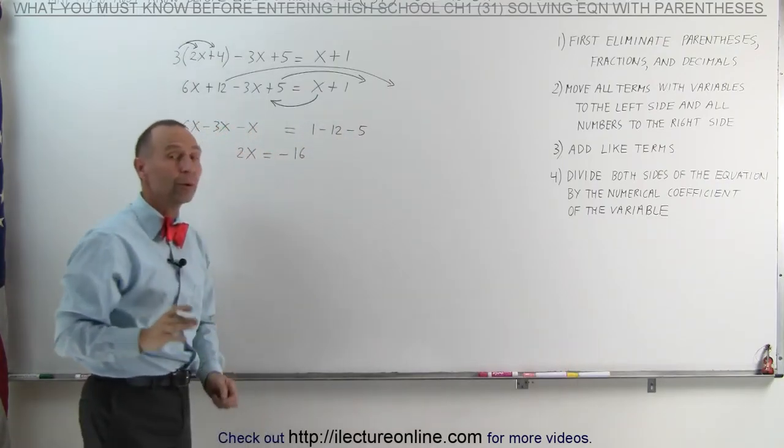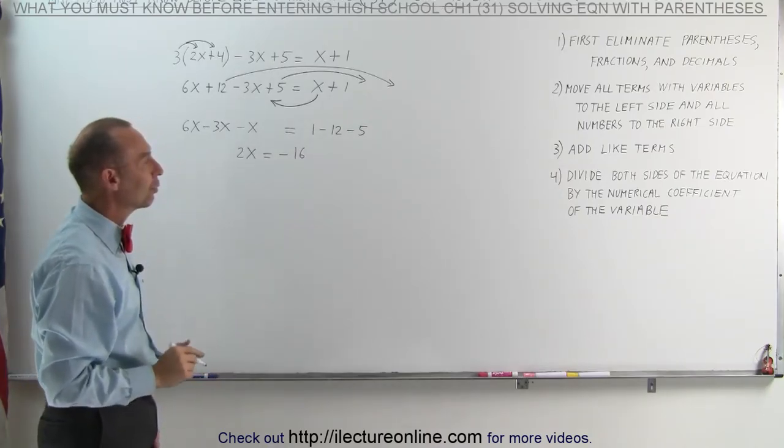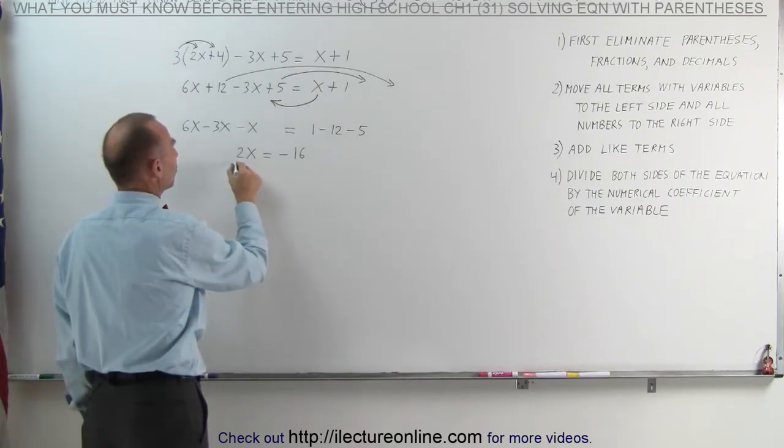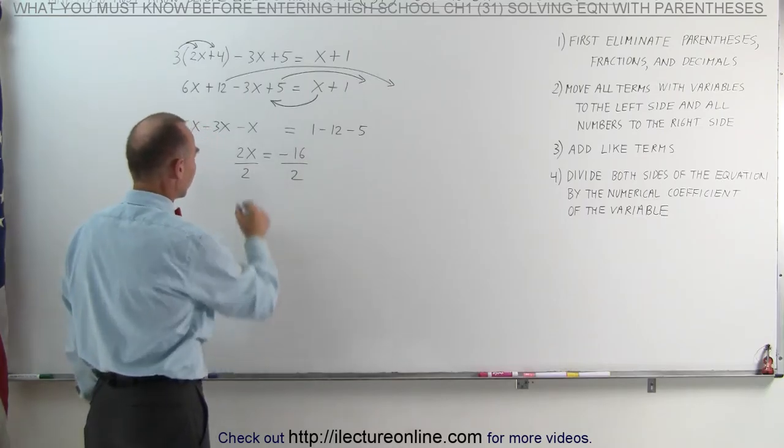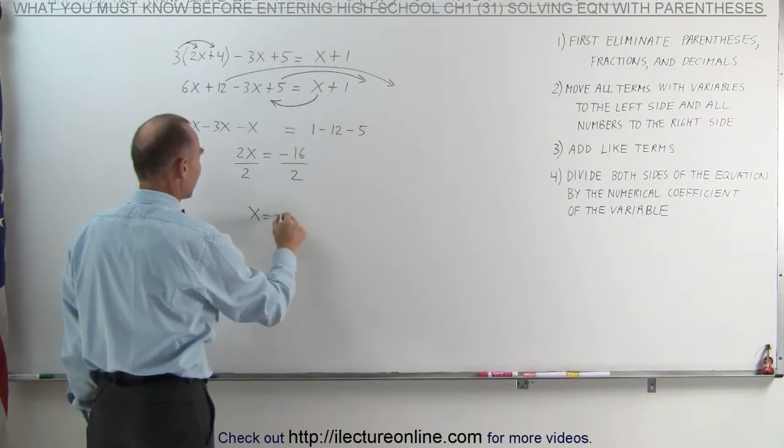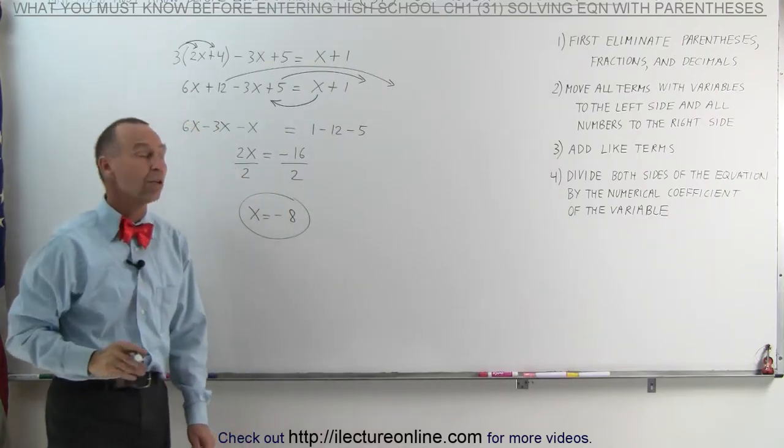The last step is we're going to divide both sides of the equation by the numerical coefficient of the variable. In this case, that would be the number 2, which means we're going to divide the left side by 2, and we're going to divide the right side by 2. The 2's cancel out. We end up with x is equal to minus 16 divided by 2 is minus 8, and that's how we solve the equation.